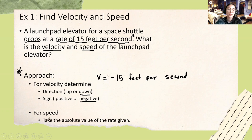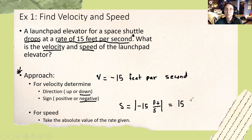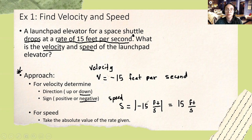Now to find the speed, we need to take the absolute value of this velocity. So to find speed, I'm going to take the absolute value of negative 15 feet per second, and it will give me positive 15 feet per second. Our velocity is negative because our object is moving down, and our speed is the absolute value of negative 15 feet per second, which is positive 15 feet per second.